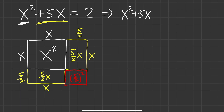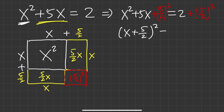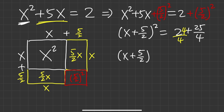To complete the square, the missing corner has sides 5/2 by 5/2, so we add (5/2) squared to both sides. The equation becomes x squared plus 5x plus (5/2) squared equals 2 plus (5/2) squared. On the right-hand side, that's 2 plus 25/4. Getting a common denominator of 4, we have 8/4 plus 25/4, so the numerator is 8 plus 25 equals 33.